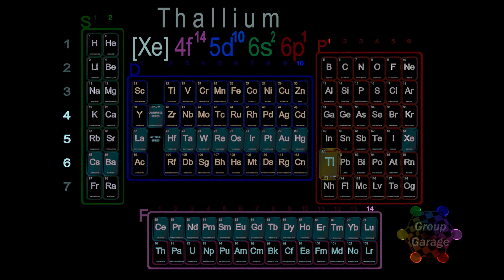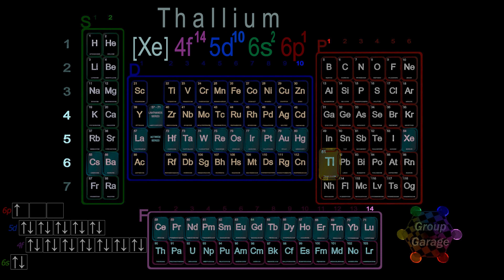So the full electron configuration is: [Xe] 4f14, 5d10, 6s2, 6p1.